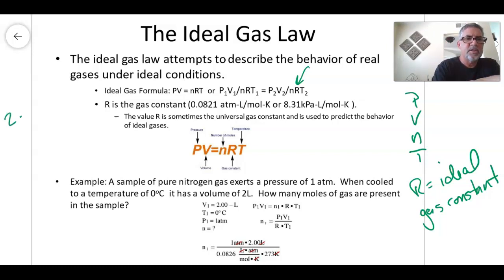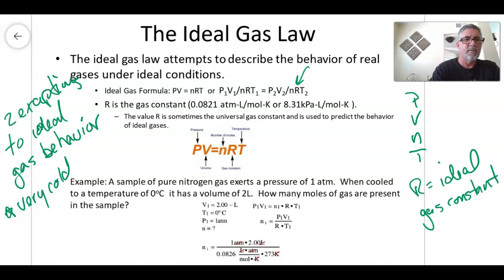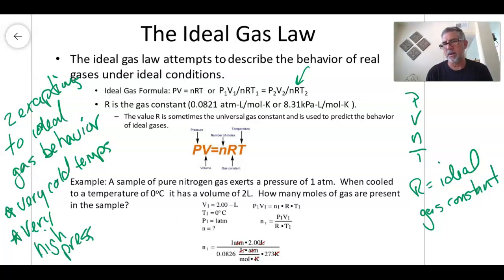Because I'll probably throw it under because there are two exceptions to ideal gases. So the first is very cold. Because at very cold temperatures, ideal gases don't move rapidly. And very high pressures. Because at very high pressure, the space between the molecules is not great enough. So those are two exceptions to ideal gas behavior. So at those two conditions, you couldn't use this equation.